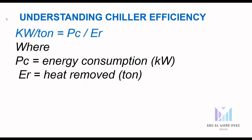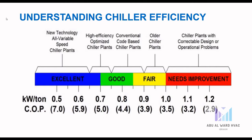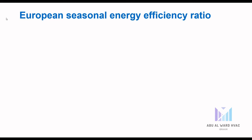Kilowatts per ton also equals power consumption (kW) divided by heat removed (EER). Looking at the rating diagram for chiller plants, for new variable-speed chiller technology the excellent range is starting from 0.5 kW/ton, while the bad amount is 1.2 kW/ton. Correspondingly, COP starts from 7 for excellent new technology, while bad plants have only 2.9 COP.